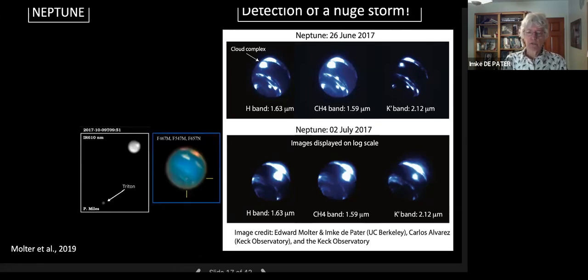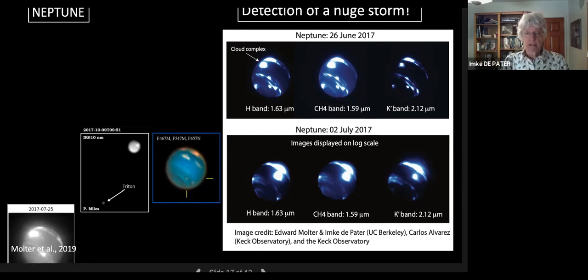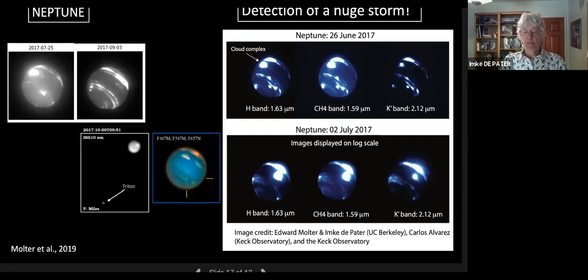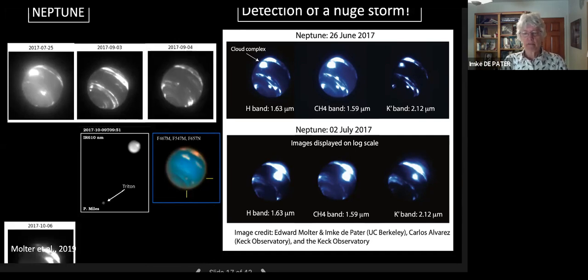This storm was also imaged regularly by the amateur community, and that gave us a wealth of information. Here's just one image from Phil Miles. It was observed with HST. Using HST and Keck together, we could, using radiative transfer calculations, show that the top of this storm had to be around the half-bar level, which is just below the tropopause. This storm was tracked over a period of seven months. It was still visible at the end of July but had disappeared in September. Instead, we see a string of cloud features along the equator. Then it was back in October and remained visible until at least the end of December. Using all these data, we could actually determine a wind speed for this storm system.